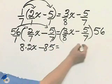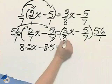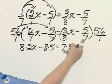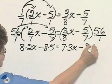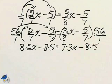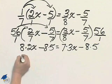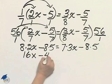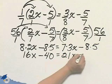8 divided into 56, 7 times, times the original numerator, 3x. 7 divided into 56, 8 times, times the original numerator of 5. The order of operations says to multiply before any adding or subtracting. 16x minus 40 equals 21x minus 40.